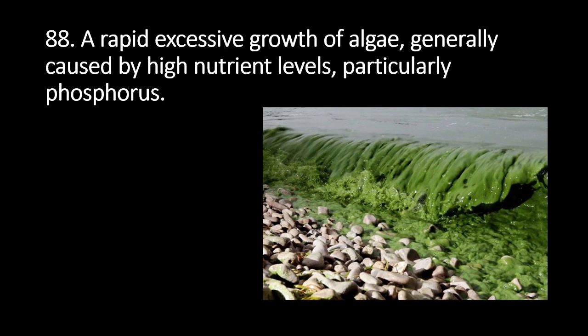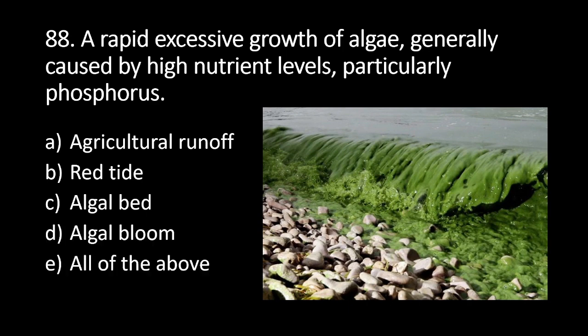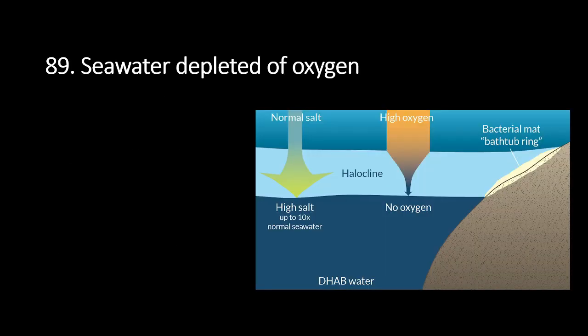Number 88: this refers to a rapid, excessive growth of algae generally caused by high nutrient levels, particularly phosphorus. A. Agricultural runoff, B. Red tide, C. Algal bed, D. Algal bloom, E. All of the above. The answer is D. Algal bloom. An algal bloom is a rapid, excessive growth of algae generally caused by high nutrient levels, particularly phosphorus.